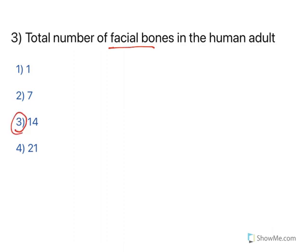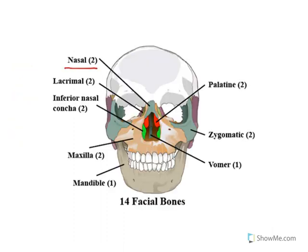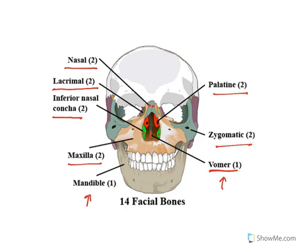The total number of facial bones in human adults is 14. There are two nasal bones, two lacrimal bones, two inferior nasal conchae, two palatine bones, two zygomatic bones, two maxilla bones, one mandible, and one vomer. The nasal bones are on top, the inferior nasal conchae are below, the vomer is the septum, the zygomatic bones are the cheek bones, the upper jaw is made up of two maxilla, and the lower jaw is one mandible.